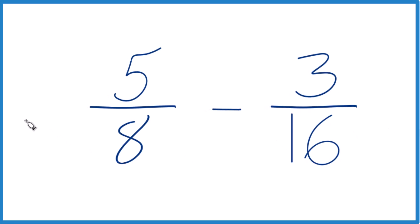So I know that 2 times 8 equals 16. That would give me 16 for both of these. But I can't just multiply the denominator by 2. I do need to multiply the numerator by 2 as well.